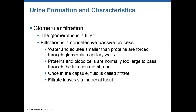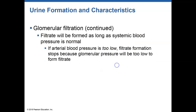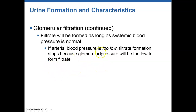The efferent arterioles then become part of that peritubular capillary bed. If we have good blood pressure, we're going to produce filtrate normally. If blood pressure drops too much, we won't be able to form as much filtrate, and that's where production of renin comes in, which we'll talk about a bit later.